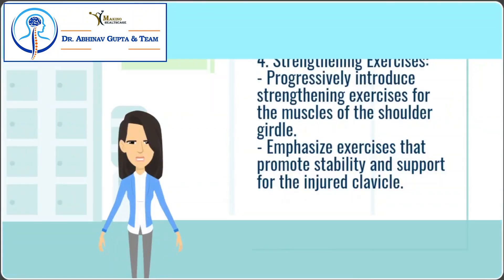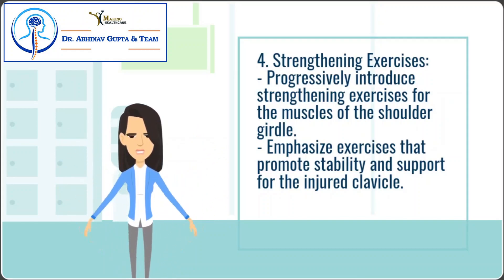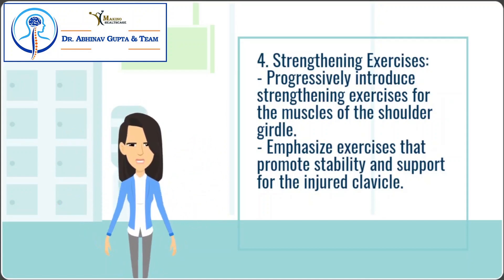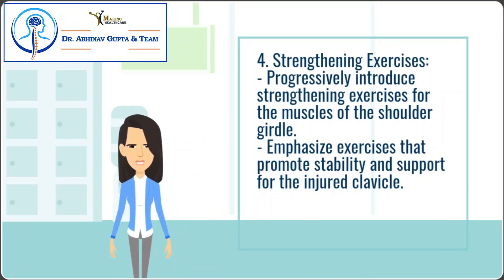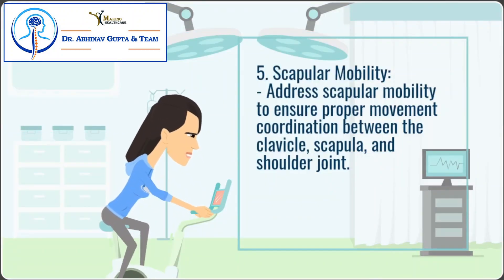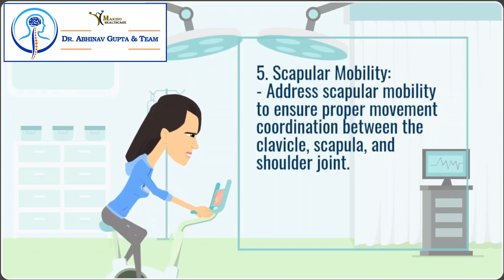Strengthening exercises: progressively introduce strengthening exercises for the muscles of the shoulder girdle, emphasizing exercises that promote stability and support for the injured clavicle. Scapular mobility: address scapular mobility to ensure proper movement coordination between the clavicle, scapula, and shoulder joint.